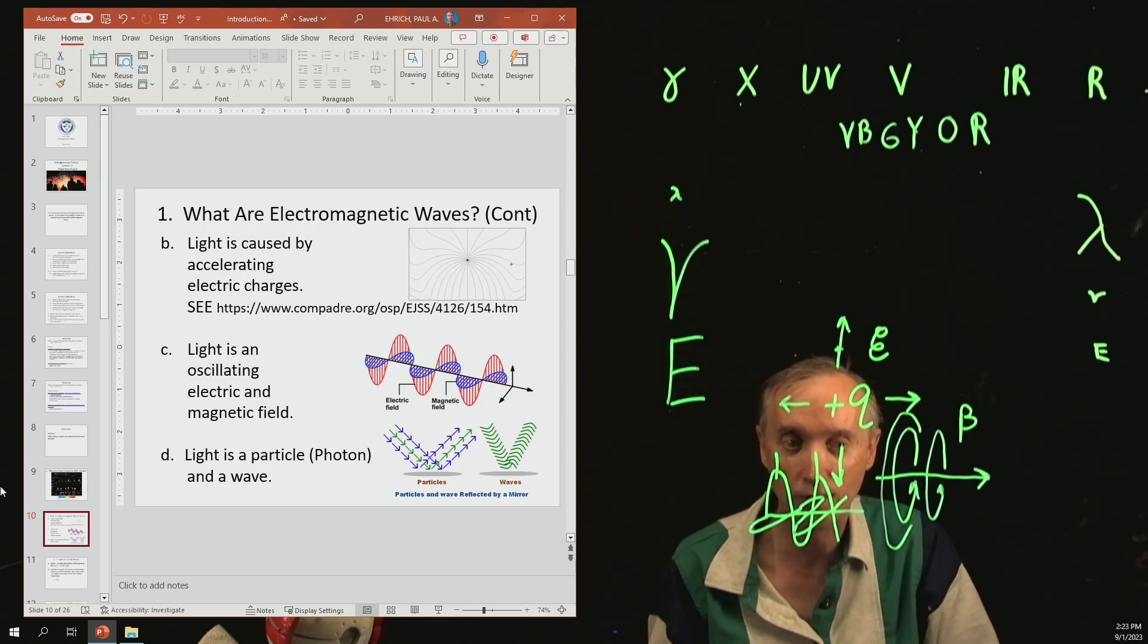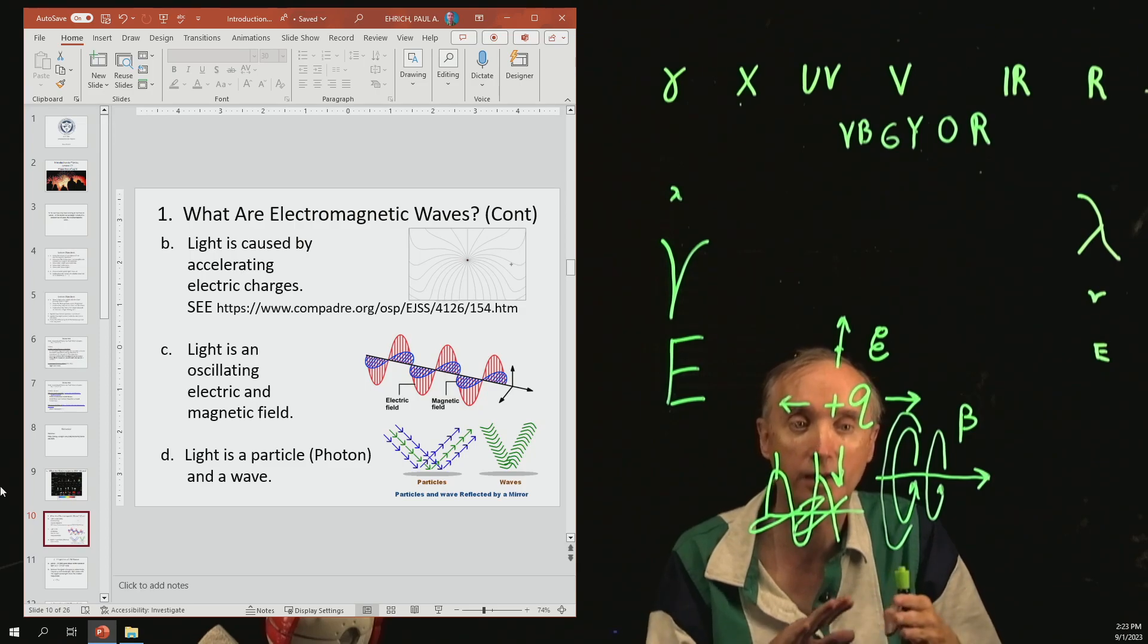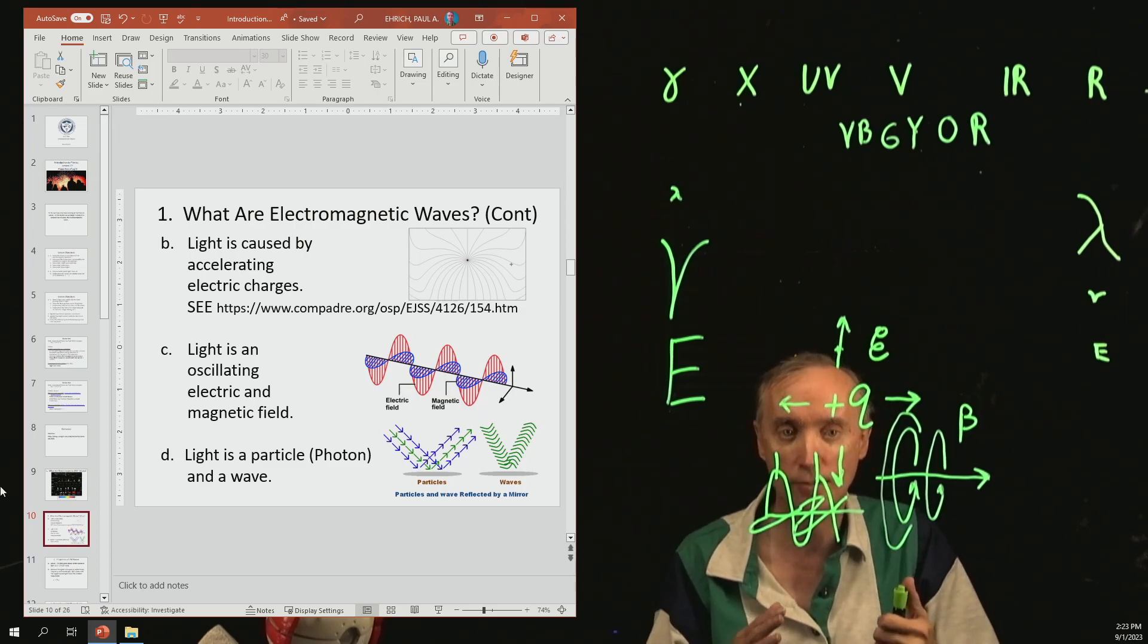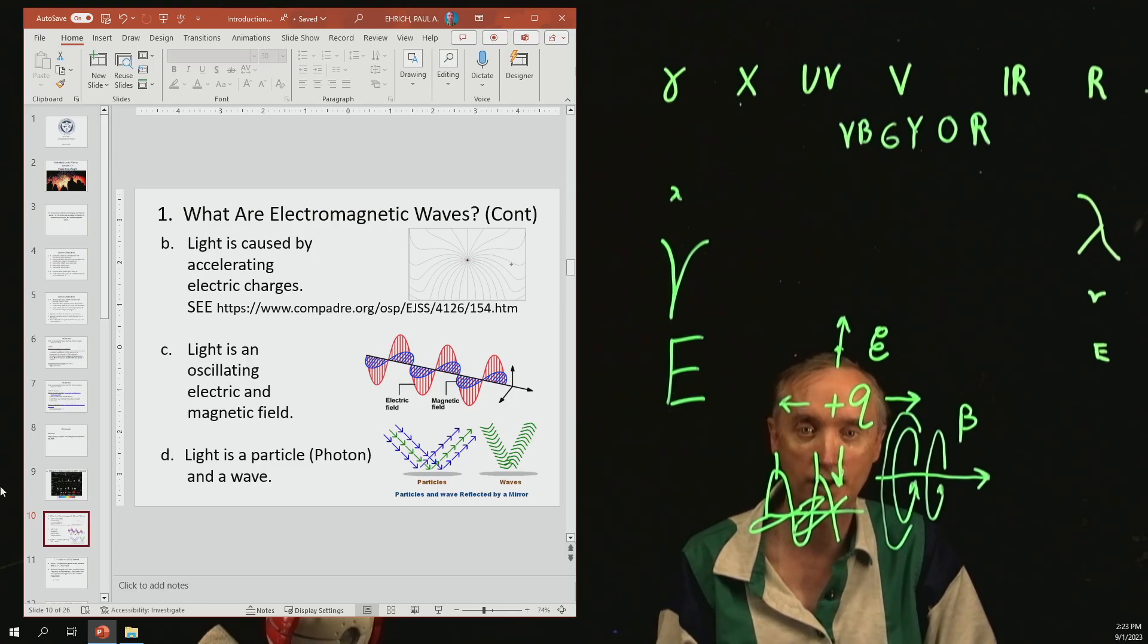So matter, which is composed of atoms, is both a wave and a particle. And light is both a wave and a particle. If you're more interested in learning about that, then you can go to the internet and go to Quantum Mechanics, where they discuss those properties of light and matter.